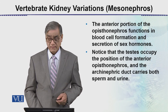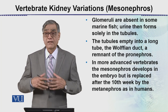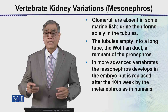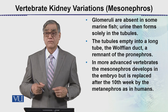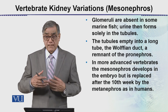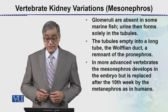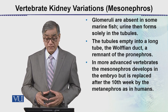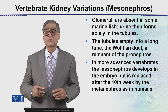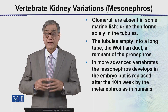Metanephros میں glomeruli اتنے develop نہیں ہوئے، لیکن amphibians کے اندر یہ کافی حد تک develop ہو گئے ہیں، کیونکہ glomeruli وہ حصہ ہے kidney کا جہاں maximum filtration ہوتی ہے blood کی۔ Reabsorption کے بعد secretion ہوتی ہے اور پھر urine formation ہوتی ہے۔ The tubules empty into a long tube — the Wolfian duct — which is a remnant of the pronephros, یعنی pronephric duct کا remnant ہے۔